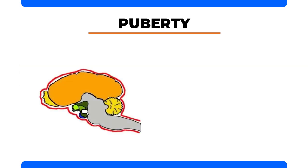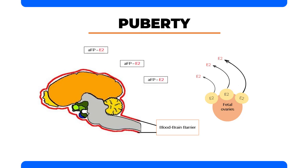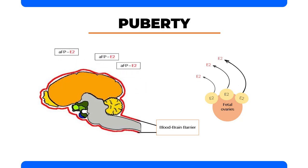During prenatal development, fetal ovaries release estradiol. This substance is unable to cross the blood-brain barrier and gain access to the hypothalamus due to the presence of alpha-fetoprotein. The alpha-fetoprotein binds to the estradiol and prevents it from crossing the blood-brain barrier. As a result, the hypothalamus is feminized and the surge center develops.